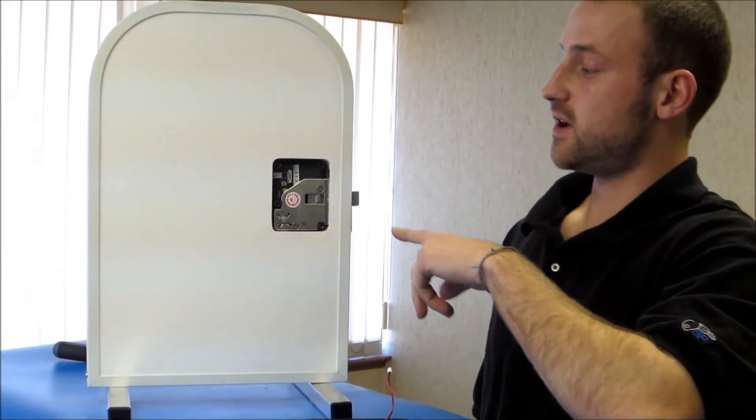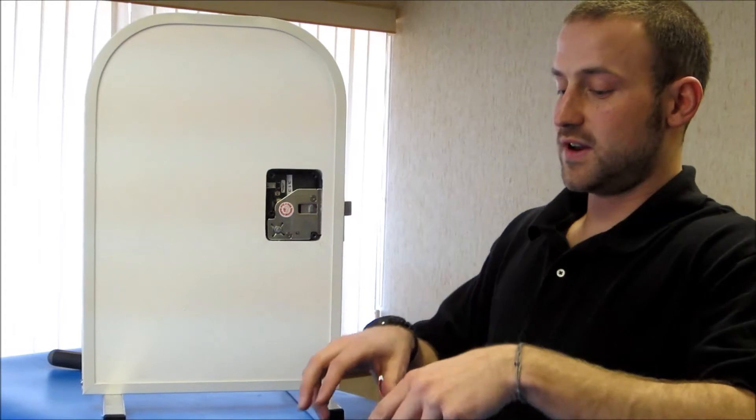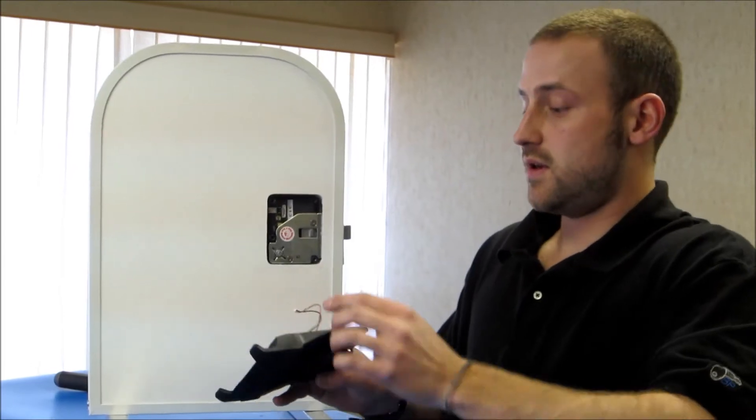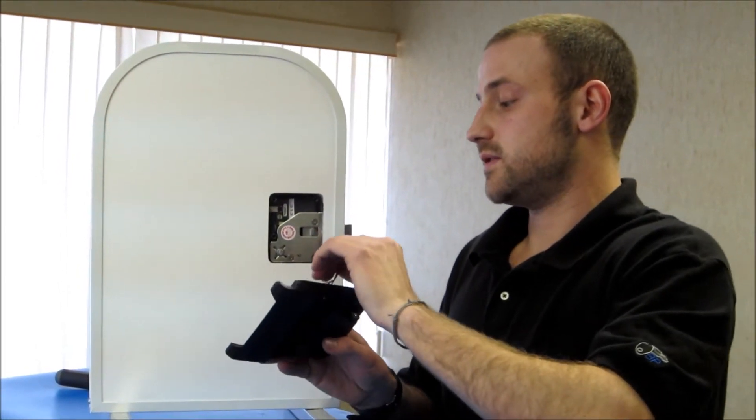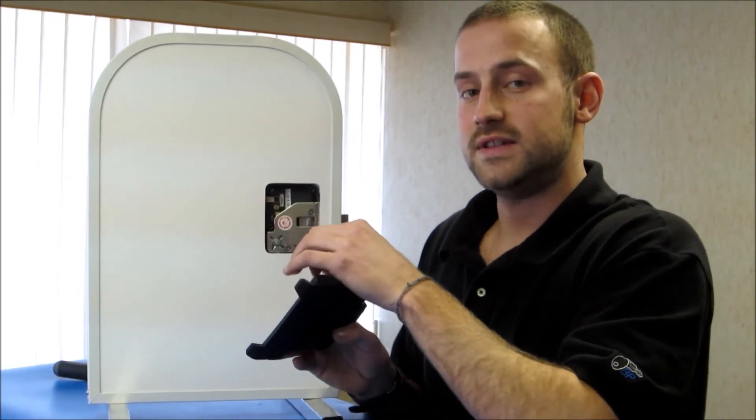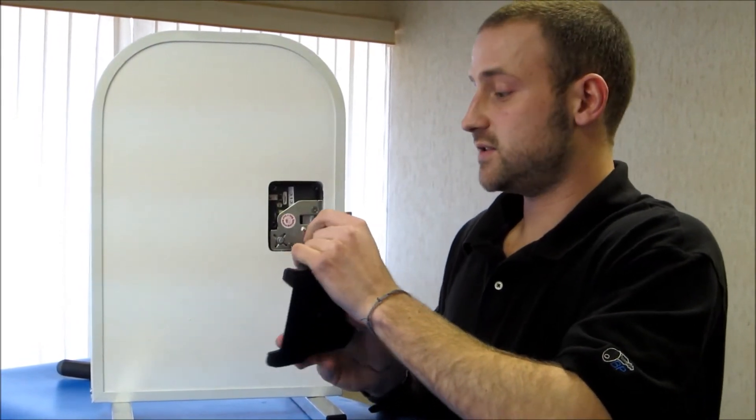Once you get your edge cover installed and the screws are secure, you want to move on to your inside plate assembly. We have already installed the batteries into the compartment. What you want to do is take this tab and install it into the receptacle. There's a detailed illustration in the instructions on how to do this.